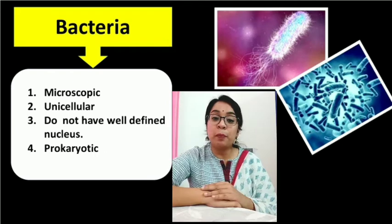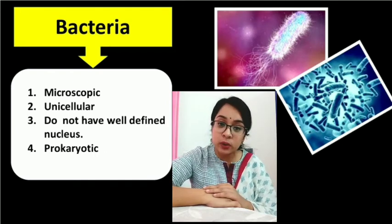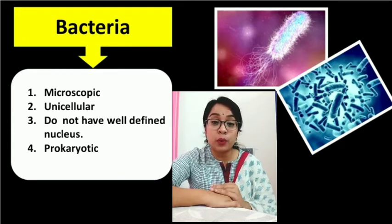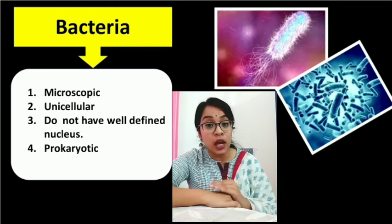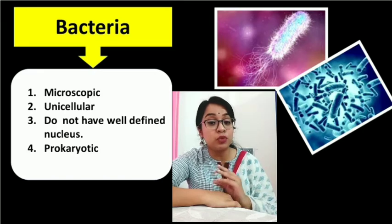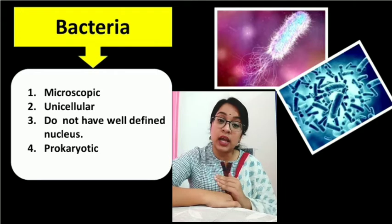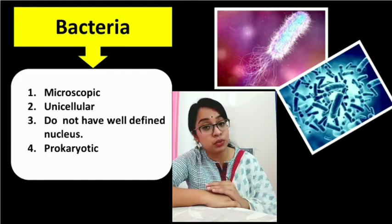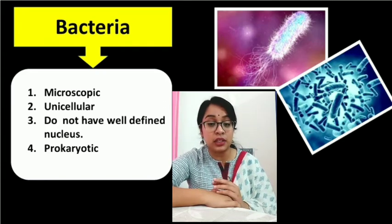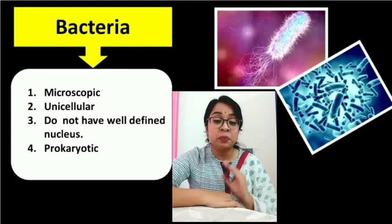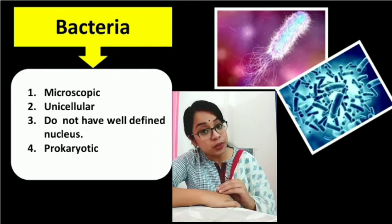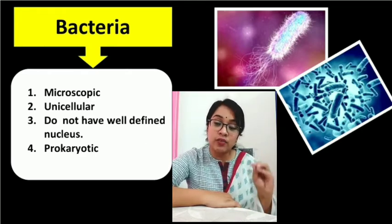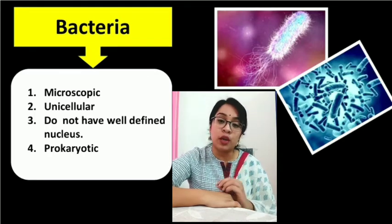Let's begin with bacteria. Bacteria are unicellular organisms — single-celled organisms. Secondly, bacteria are prokaryotic cells. What does prokaryotic mean? Pro means primitive; karyotic comes from the word karyon, which means nucleus. So bacteria have a primitive nucleus. In a cell there is a nucleus where the genetic materials are present. But in the case of bacteria, the genetic material is not enclosed within a membrane — there is no well-defined nucleus present in the cell. The genetic material is there but it may be scattered; it is not well defined by a membrane. So these types of cells are called prokaryotic cells.